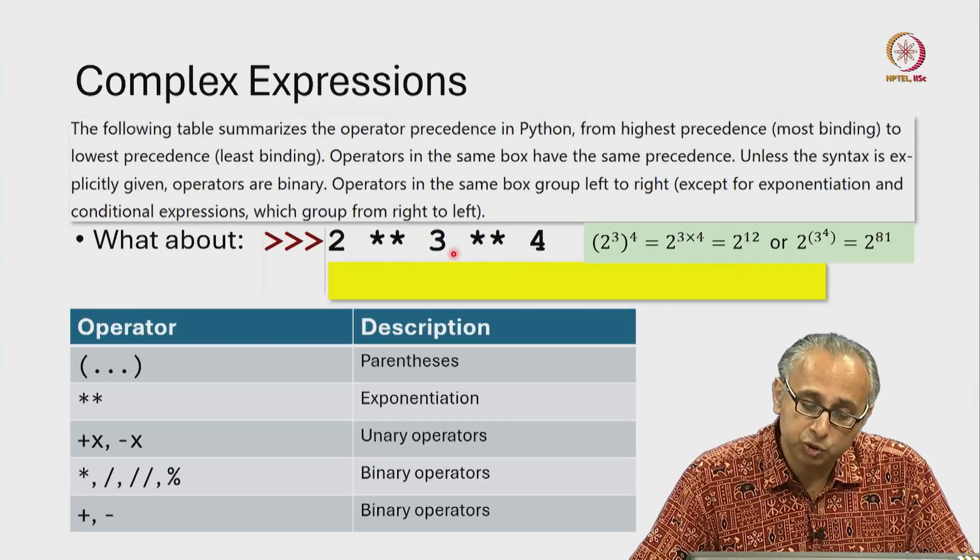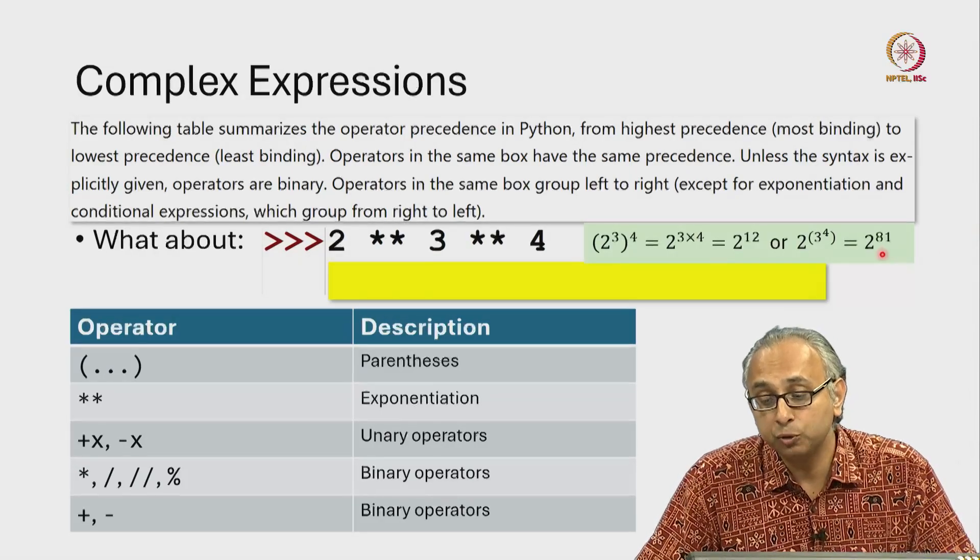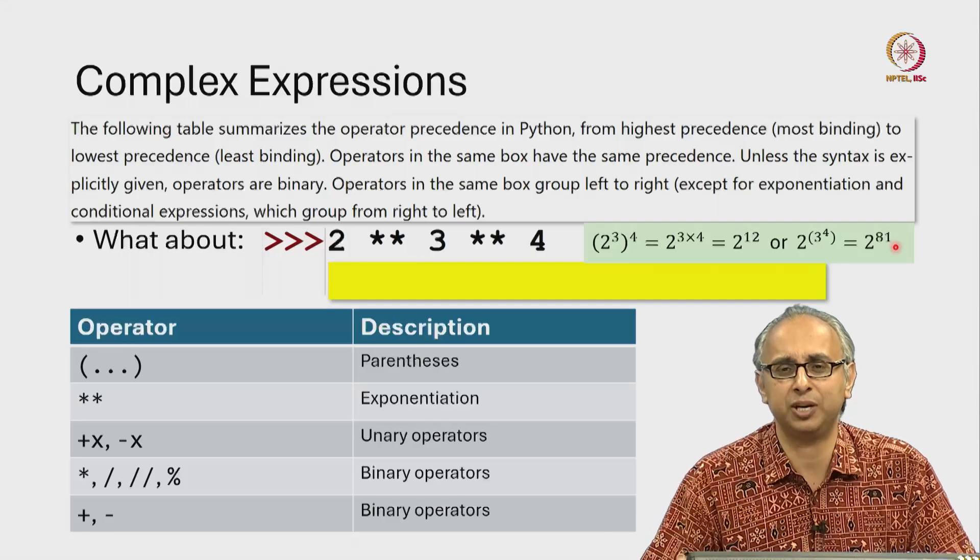On the other hand, this could be first calculate 3 to the power 4 which is 81 and then do 2 to the power 81 which is a huge number.